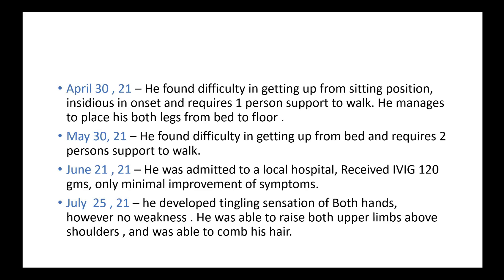After one month he developed tingling sensation of both hands; however, there was no weakness. He was able to raise both upper limbs above the shoulders and was able to comb his hair — so only sensory involvement of both hands. This shows the patient now has upper limb distal involvement but only a positive sensory symptom in the form of tingling. The whole history started in March — so over about six months the disease has marched: peripheral sensory, then mononeuropathy, then proximal muscle weakness and radiculopathy in the lower limbs, and now upper limb sensory involvement.